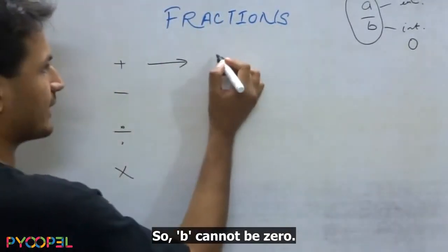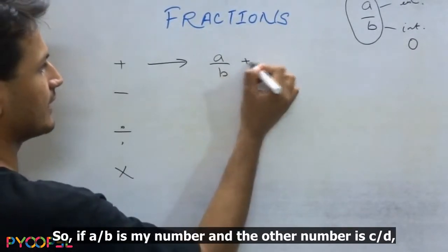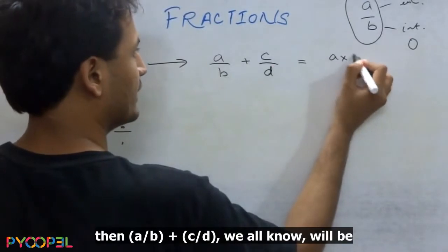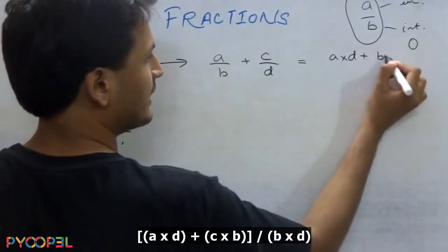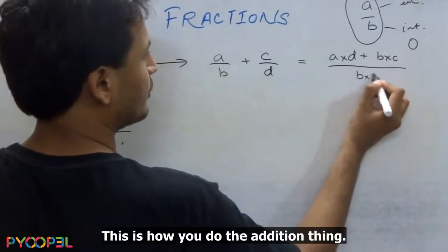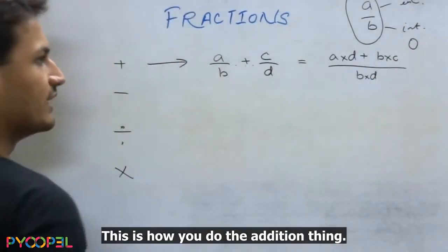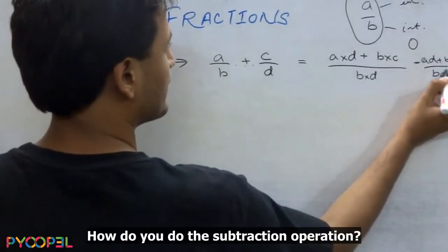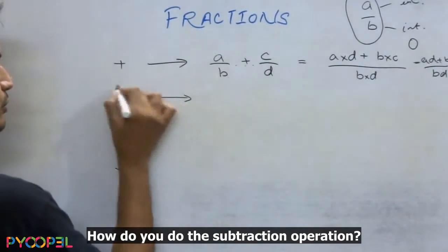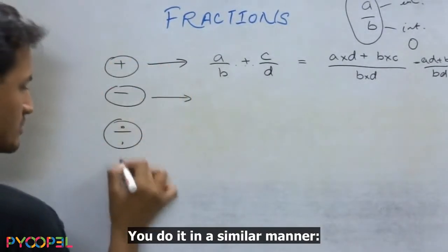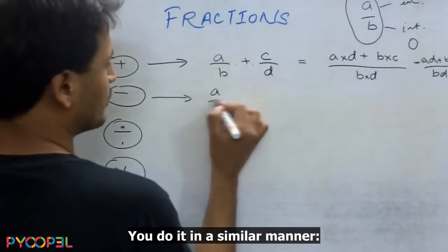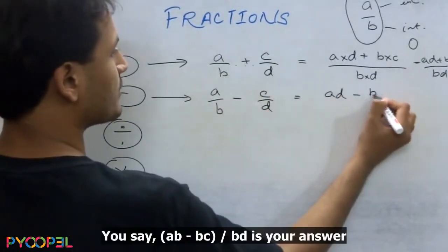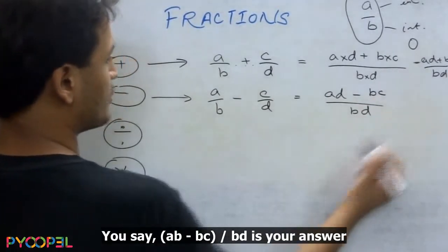So if a by b is my number and the other number is c by d, then a by b plus c by d we all know will be a into d plus c into b upon b into d. This is how you do the addition thing. So you have ad plus bc upon bd. How do you do the subtraction operation? You do it in a similar manner. You say ad minus bc upon bd is your answer.